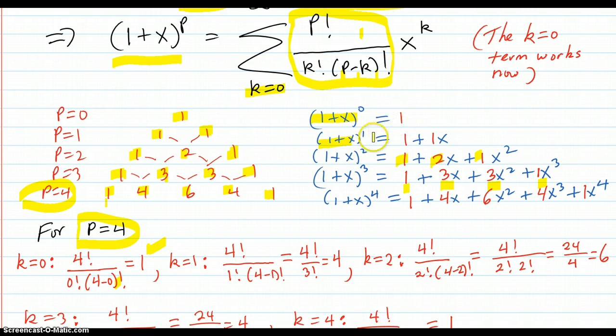k equals 1, p factorial over 1 factorial, 4 minus 1 factorial, 4 factorial over 3 factorial, that's 4 times 3 factorial over 3 factorial, that counts out to 4, and there's your 4.